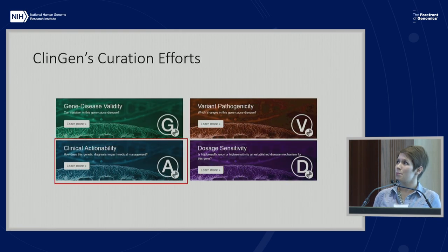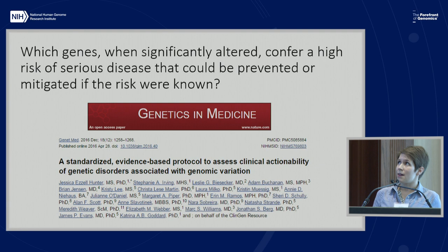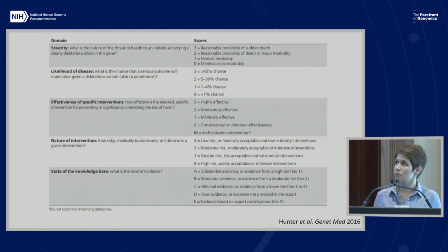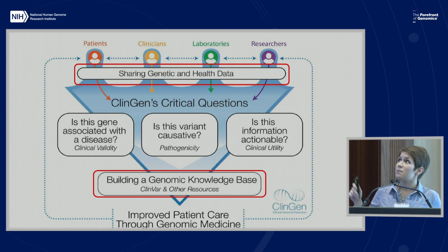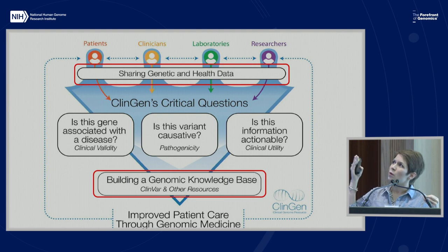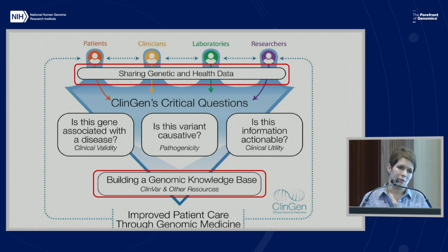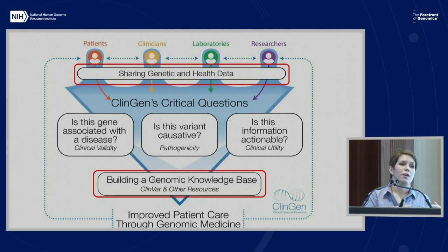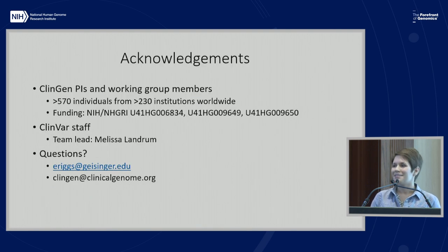We also have actionability curation, which looks at which genes confer a high risk of serious disease that could be prevented or mitigated if the risk was known. To close, neither ClinGen nor ClinVar could act in a vacuum — we really need both pieces. Without the shared data available in ClinVar, ClinGen wouldn't be able to do any of its curation work. And without some of the support that ClinGen provides, the quality of ClinVar might go unchecked. Both things are important, and both things work together.